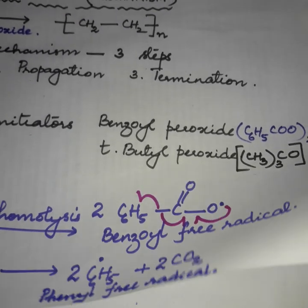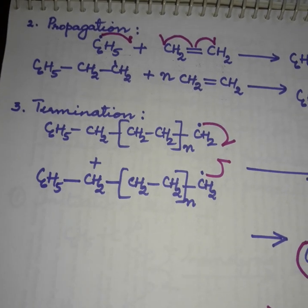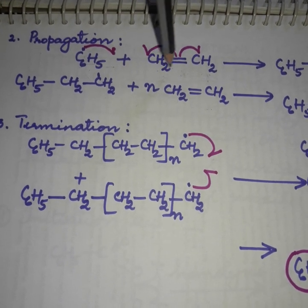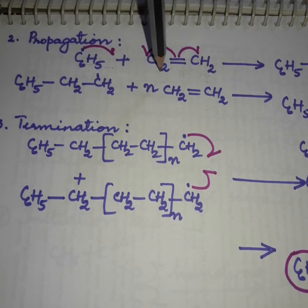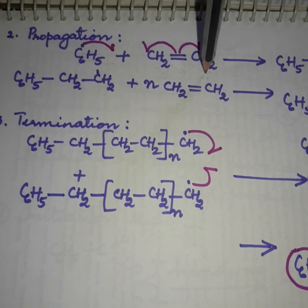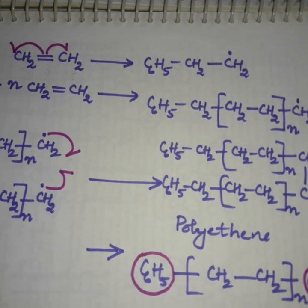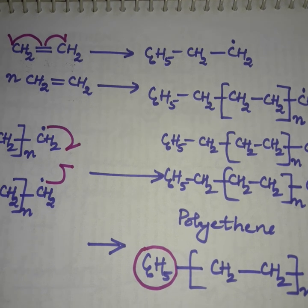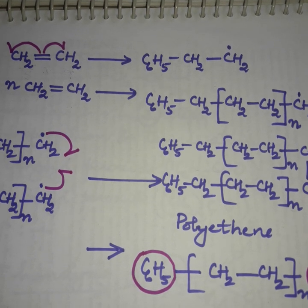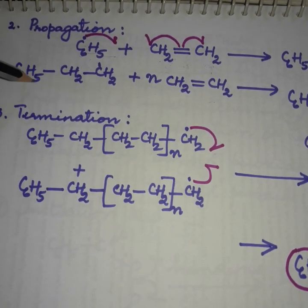In the propagation step, the phenyl free radical attacks the double bond of the monomer unit, which is ethene (CH2=CH2). This results in a long chain free radical: C6H5-CH2-CH2•, which further reacts with many monomer units in the next step.